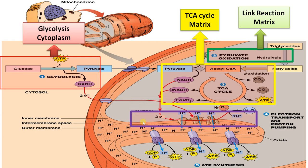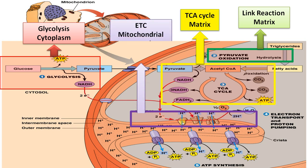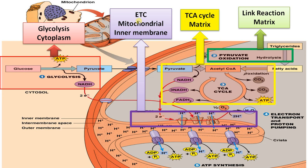As you can see, the electron transport chain is located on the inner mitochondrial membrane. The protein complexes involved in the electron transport chain are located in the inner mitochondrial membrane. The electrons from NADH and FADH2 enter these protein complexes and move through them.